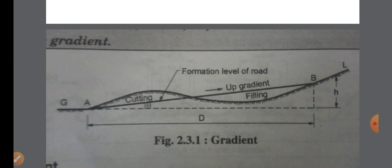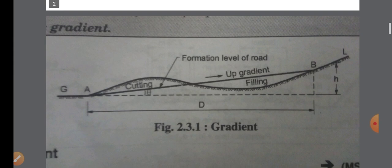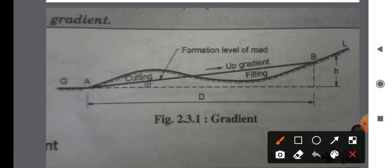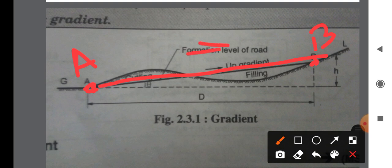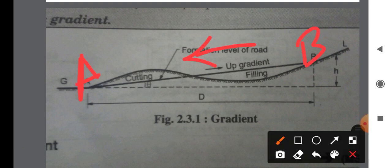Formation level means we are going to use a specific rise and fall. We use the gradient to describe the difference between the road height at different level points A and point B. We can connect two points — if we consider the direction from A to B, the gradient will be Upgradient, and if we consider the direction of B, the gradient will be Downgradient.